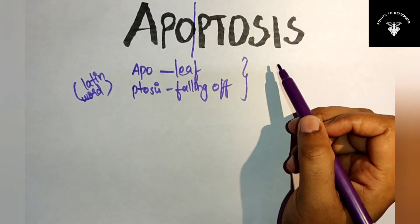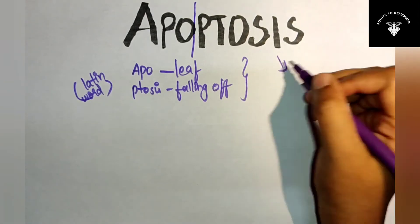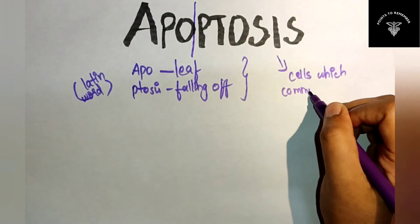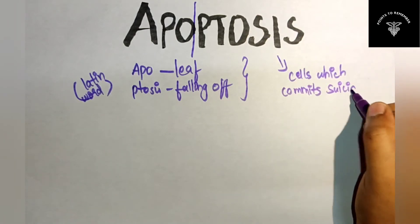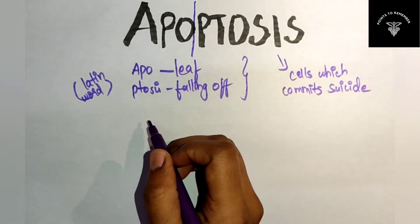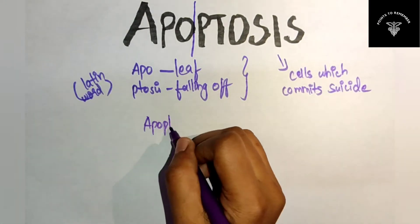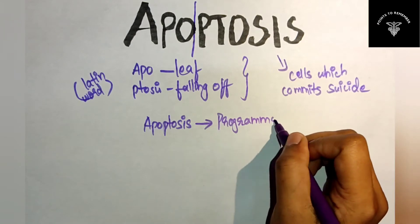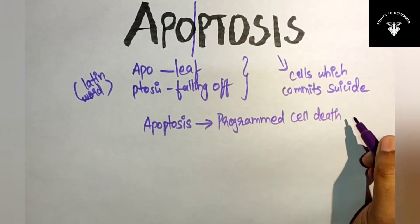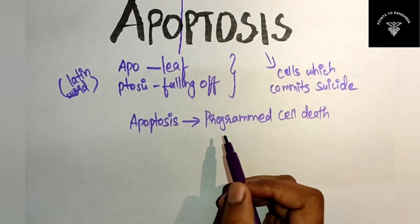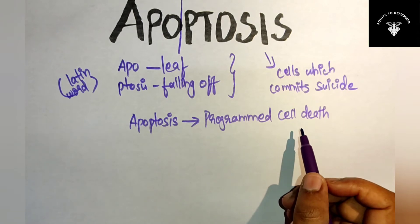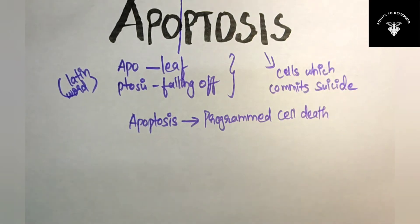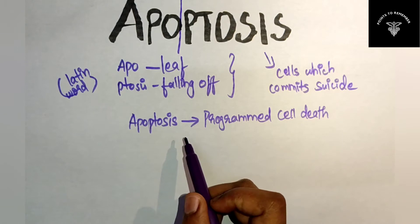These are the cells which commit suicide. So they defined apoptosis as the programmed cell death. Apoptosis means the cell dies on its own — it just commits suicide. That is the meaning of apoptosis.